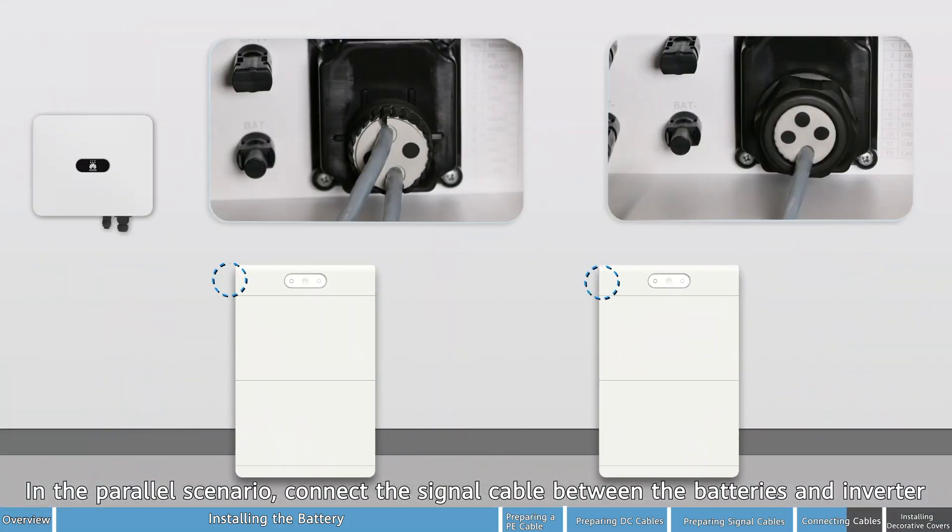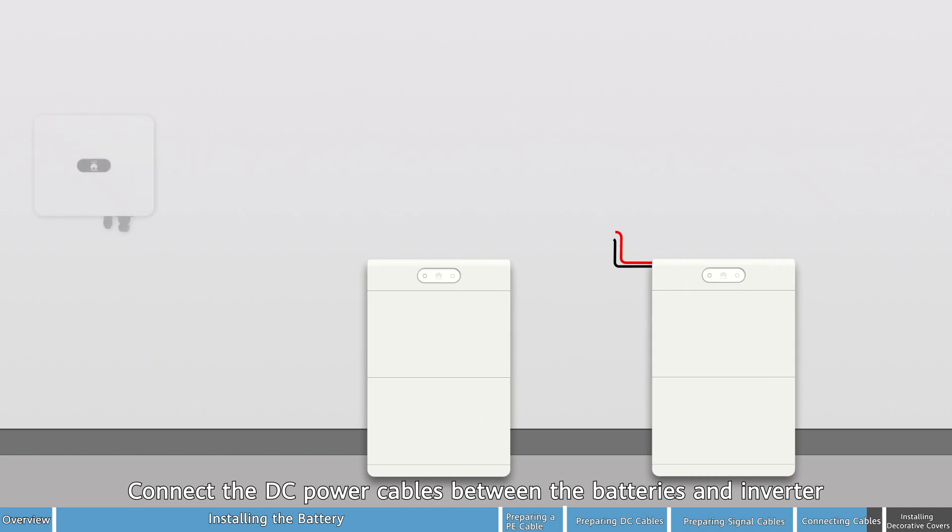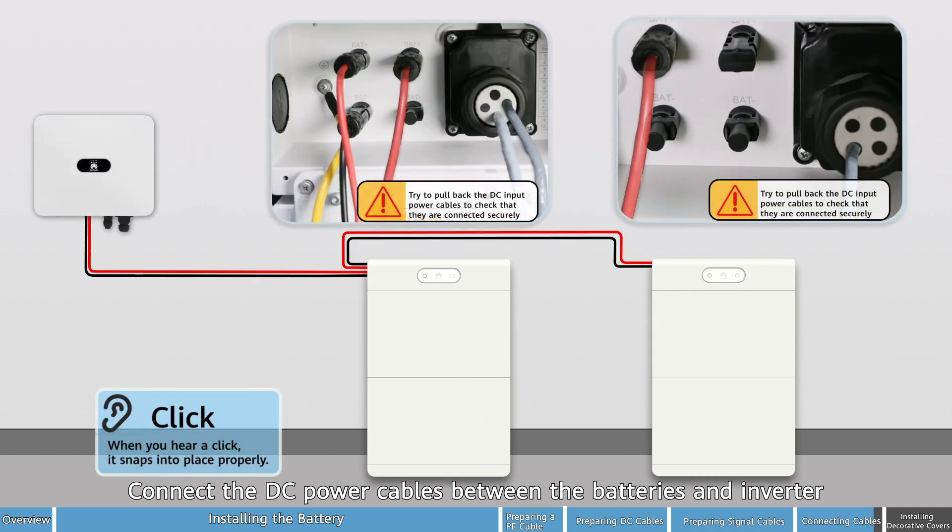In the parallel scenario, connect the signal cable between the batteries and inverter. Connect the DC power cables between the batteries and inverter.